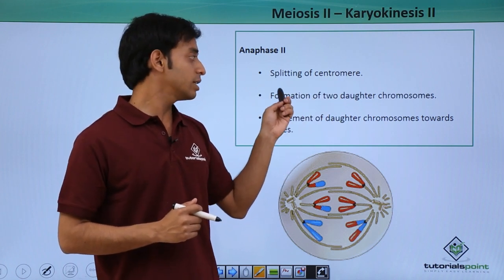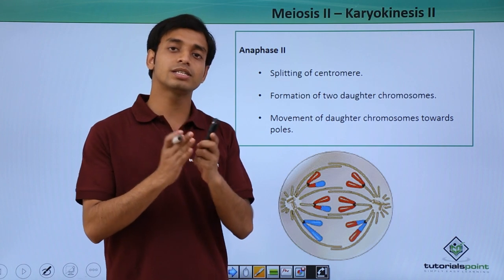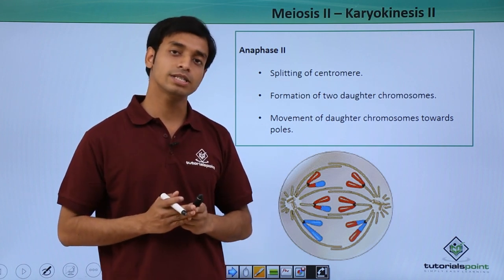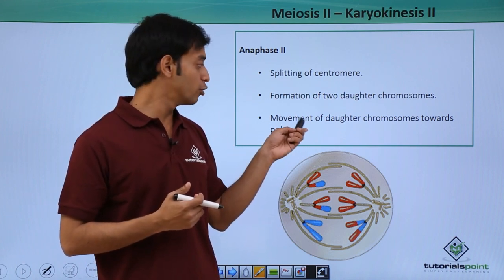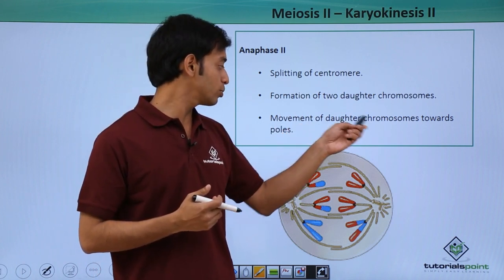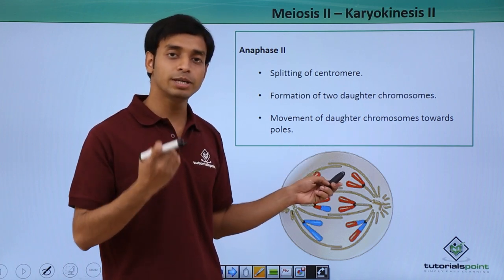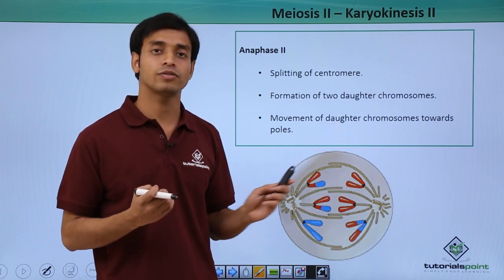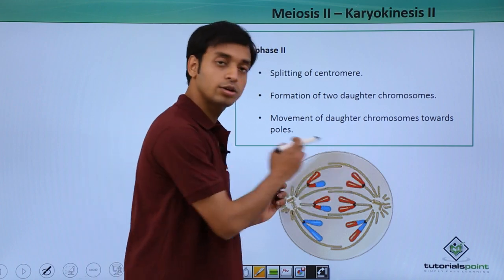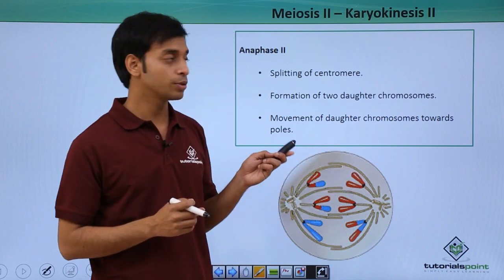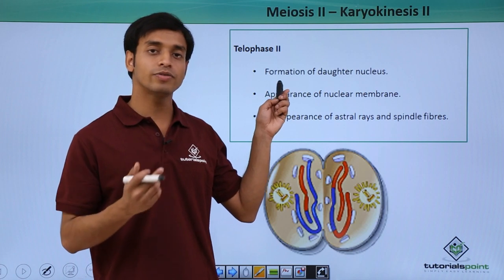The splitting of centromeres results in the formation of two daughter chromosomes, because the sister chromatids have been separated. This also shows the movement of daughter chromosomes towards the poles. Because of the process of depolymerization of the spindle fibers, the chromosomes are pulled towards the opposite poles.